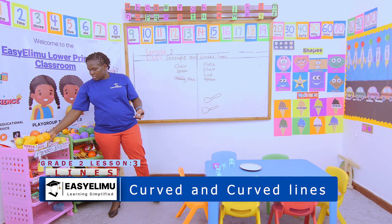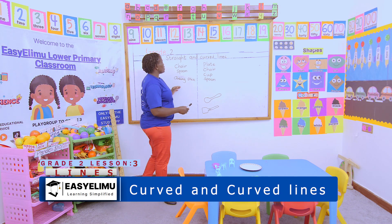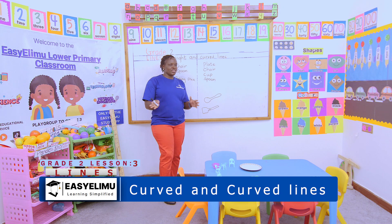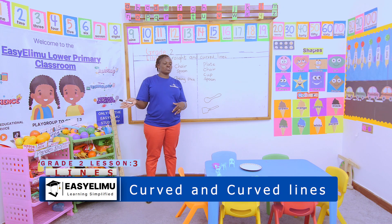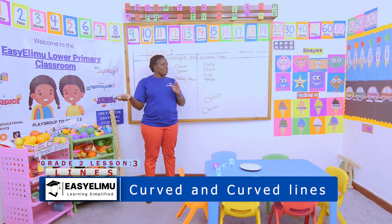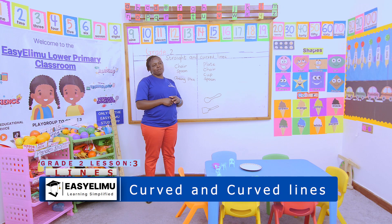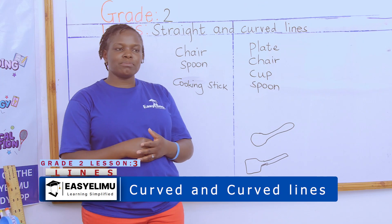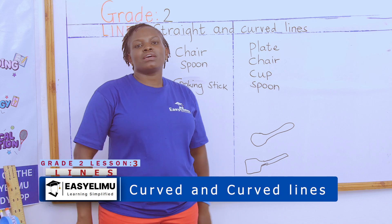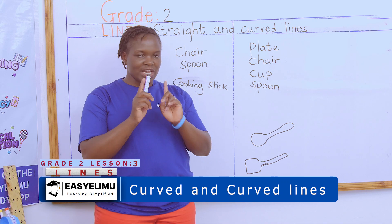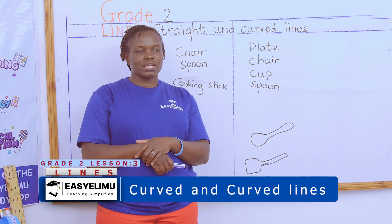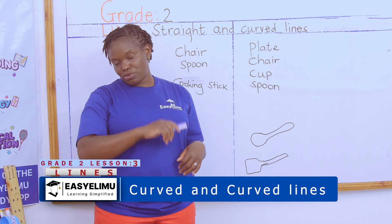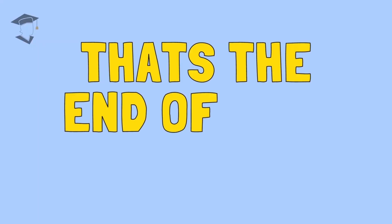So that when you meet in the next lesson, we are able to identify things with straight lines — put things with straight lines on one side and things with curved lines on the other side. Any problem? Any question? It was nice having you around and I hope I will see you again.